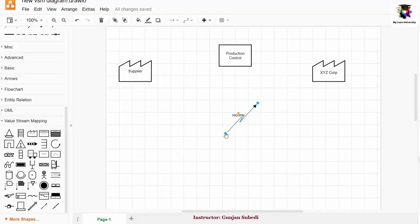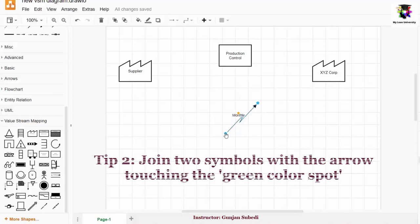So the next tip that I want to give you while drawing value stream map is always join two symbols on the green color of these symbols. If I hover around here, I see that a green symbol is appearing here. So I click on that.